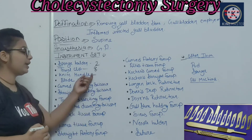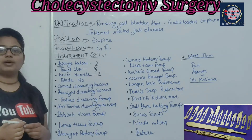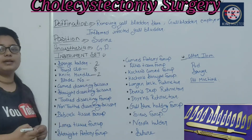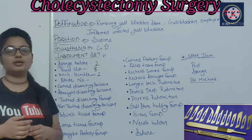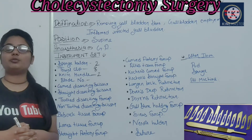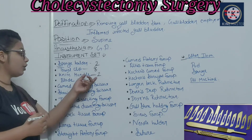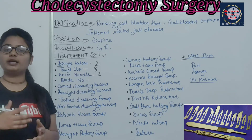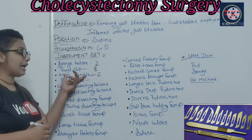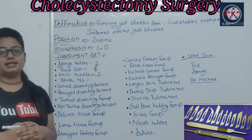Next is the knife handle. You need 2 knife handles — number 3 and number 4. The blade numbers are 11 and 15; you can also take 20 or 22. Remember: knife handle number 3 takes blades 11 or 15, while knife handle number 4 takes blades 20 to 25. The knife handle with blade is used to cut the patient's abdomen.